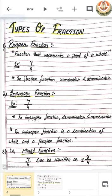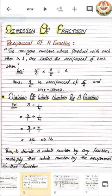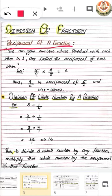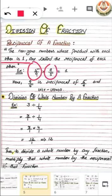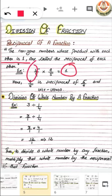After that, we had learned about division of fractions. First of all, we have to know what is the reciprocal of a fraction. A non-zero number whose product with each other is 1. For example, these both are non-zero fractions and their multiplication with each other gives answer 1. That means we can say that both of them are reciprocal to each other.